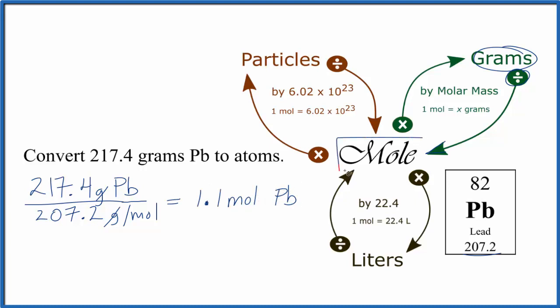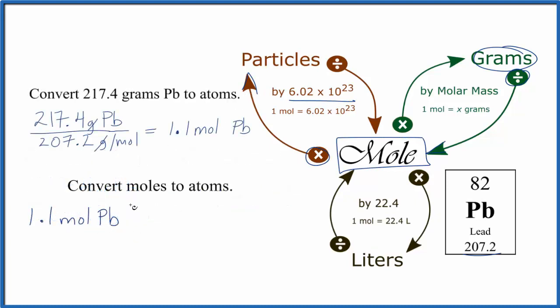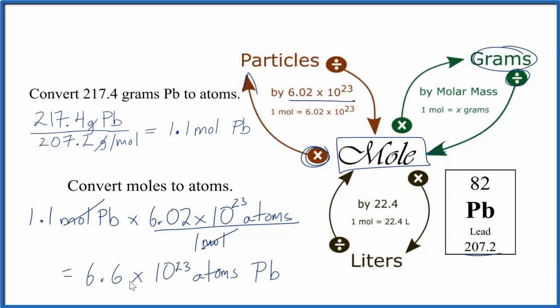Now that we have moles, we just multiply by Avogadro's number, and that gives us atoms. So we have our 1.1 mole of lead, we multiply by Avogadro's number, and the units for Avogadro's number are atoms in one mole. So when we multiply, we have moles on the top here, and the bottom, they cancel out, we're left with atoms. So we get 6.6 times 10 to the 23rd atoms of Pb.